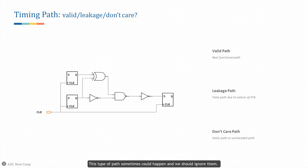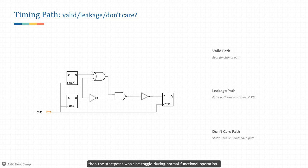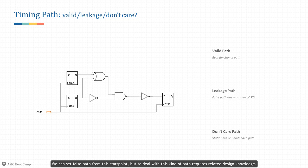This type of path sometimes could happen and we should ignore it. A don't-care path is more of a constraint issue — if there are timing paths reported by the tool but the start point holds a static value, for example some pre-programmed configuration register, then the start point won't be toggled during normal functional operation. There is no point to check the timing path for this start point. We can set false path from this start point, but dealing with this kind of path requires related design knowledge.